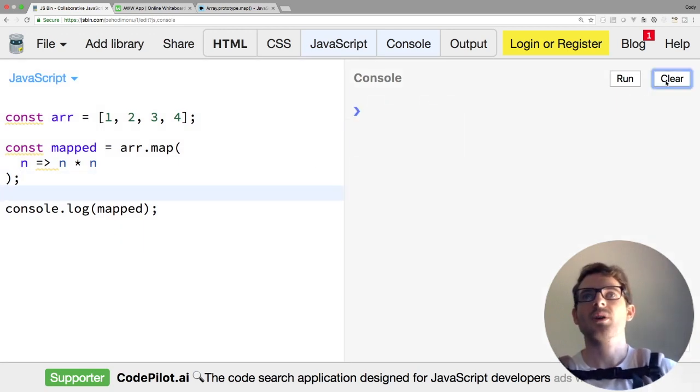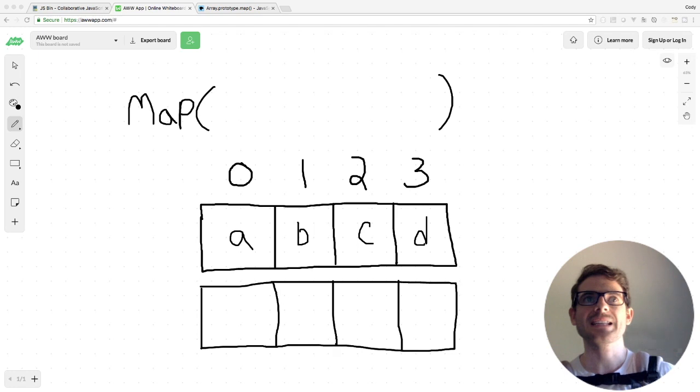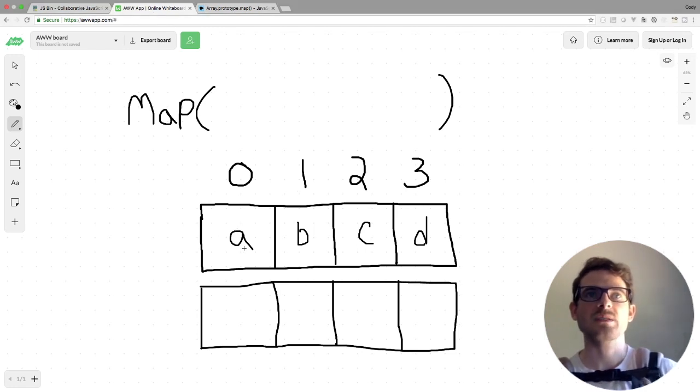So let's go ahead and do one more example to kind of understand what's going on. For this next example, we're going to try to map this array of lowercase characters to an array of uppercase characters. We're going to be using a string helper function called toUpperCase if you're not familiar with it.